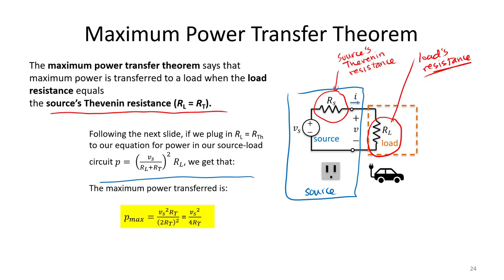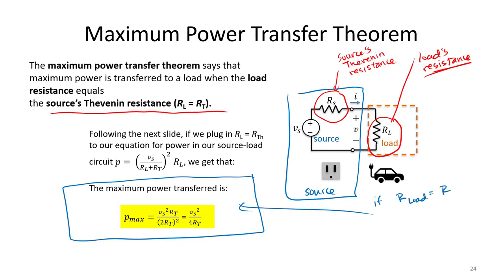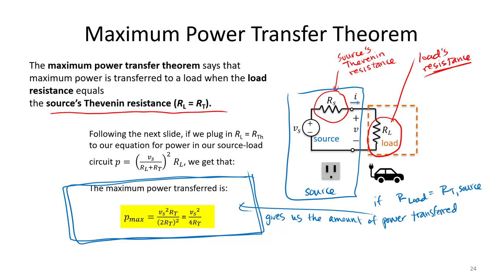If our load resistance equals the Thevenin resistance of the source, the maximum power transferred is given by V_s² / (4·R_T), where V_s is our source's Thevenin voltage and R_T is the source's Thevenin resistance. We need to be able to calculate the Thevenin equivalent in order to easily determine maximum power transfer. This is another really important application of Thevenin's and Norton's theorem.